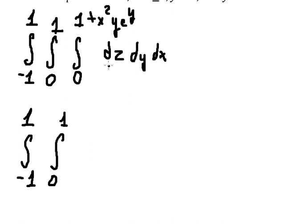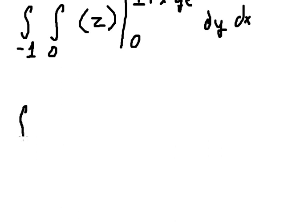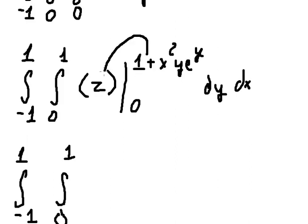The integral of dz gives us z, and we put in the bounds from zero to one. We put this upper bound in here and the lower bound zero in here.